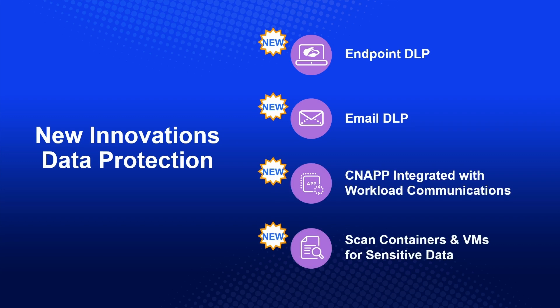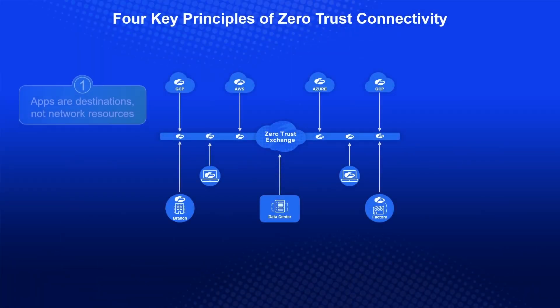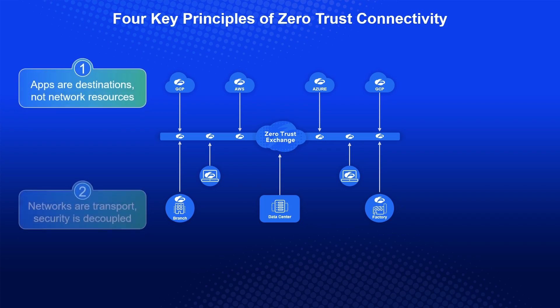Endpoint DLP, which our customers asked for over the years, is here. Email DLP is here. Everyone talks about CNAPP, but no one talks about CNAPP integrated with workload communication — that's what we have done as a unique functionality. Scanning cloud contents and VMs for sensitive data is also available. For zero trust connectivity, our job is to make it easy and simple and really use any network simply as transport and plumbing without having to worry about route table management.